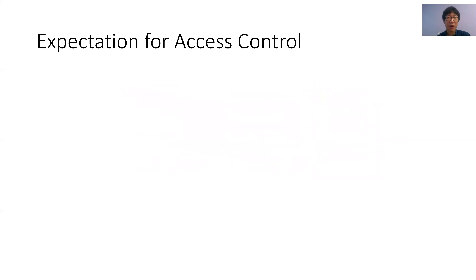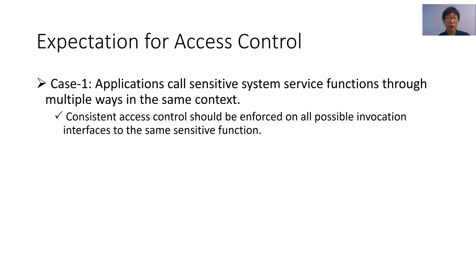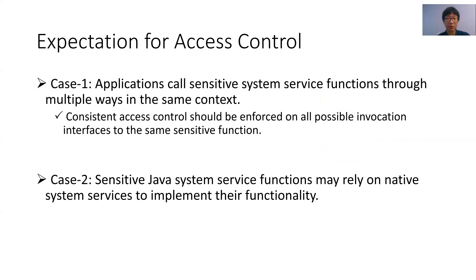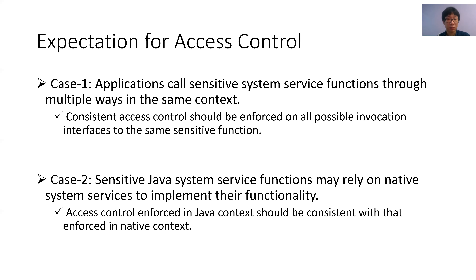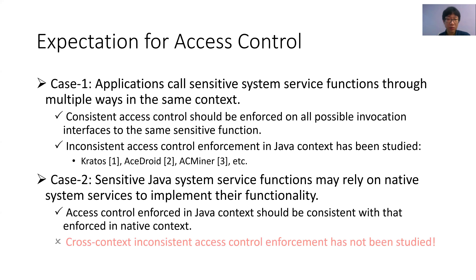Android system services provide both Java and native interfaces for applications to invoke sensitive system functions, and it is expected that Android enforces consistent access control to restrict invocation to these system services in two aspects. First, since Android applications can invoke sensitive functions of system services through multiple ways in the same context, consistent access control should be enforced on all possible invocation interfaces to the same function. Second, since sensitive functions of Java system services may rely on native system services to implement their functionality, the access control enforced in the Java context should be consistent with that in the native context. Unfortunately, recent studies show that inconsistent access control enforcement exists in Android's Java system services, and to the best of our knowledge, none of the existing works addresses inconsistent access control enforcement across Java contexts and native contexts of Android. Therefore, in order to fill this gap, we conduct the first systematic investigation on cross-context inconsistent access control enforcement in Android.